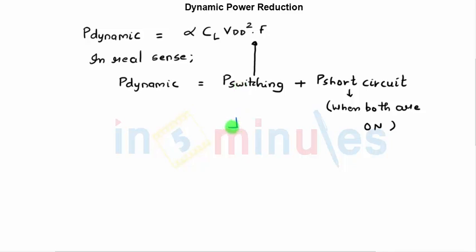Now what is the short circuit power dissipation? Suppose this is my inverter, and we all know that our inputs are not ideal - it has finite rise time and finite fall time. It might so happen that at specific inputs both my PMOS and NMOS transistors are turned on. In that case there will be a direct path from VDD to ground for the current to flow, and this is nothing but the short circuit power dissipation.